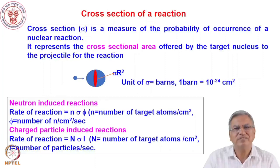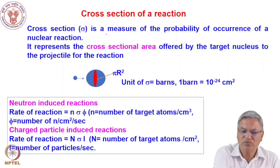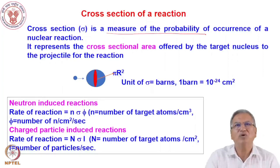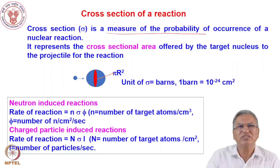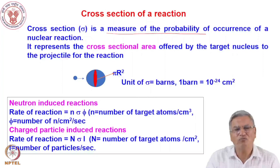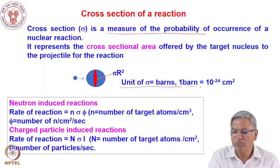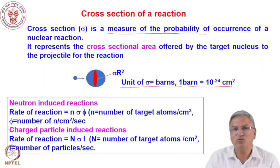The cross section, which we denote as sigma, is a measure of the probability of occurrence of a nuclear reaction. In very simple terms, it is the cross-sectional area that the target nucleus offers to the projectile. From this, the cross section derives its unit of barn, where one barn is 10⁻²⁴ cm².